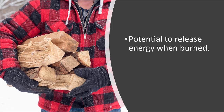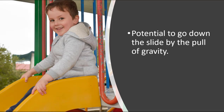Another form of potential energy you've probably seen is firewood. It has the potential to release energy when it's burned. The final example is a slide — if you get on top of a slide or a hill, you have the potential to go down by the pull of gravity. You're not working hard to go down; gravity is pulling you down. That's the potential energy from gravity.